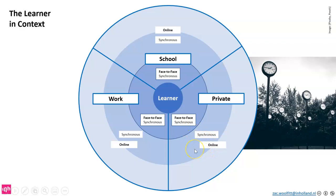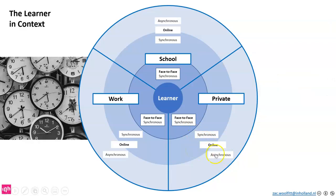The second level of online is when we're learning asynchronously. Here you can see all the clocks are at a different time. When we learn asynchronously, that's when you choose when you learn, and the people you're learning with do not have to be in the same moment in time.